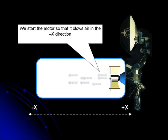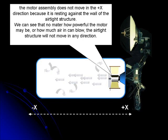We start the motor so that it blows air in the backward or minus X direction. The motor assembly does not move in the plus X direction because it is resting against the wall of the airtight structure. We can see that no matter how powerful the motor may be or how much air it can blow, the airtight structure will not move in any direction.